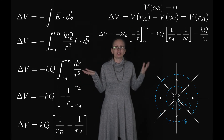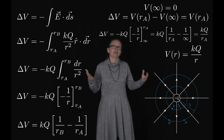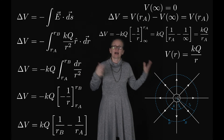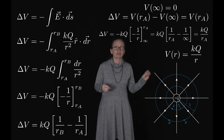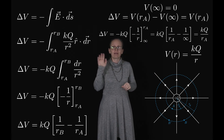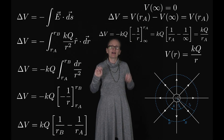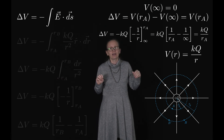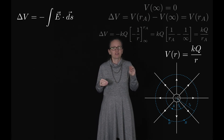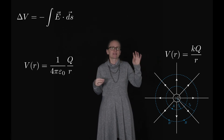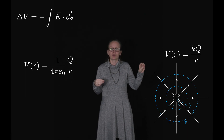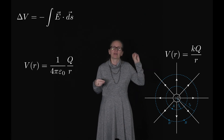This generalizes to any radius R around a point charge: V(R) = KQ/R. Recalling that Coulomb's constant K equals 1/(4πε₀), we can also write this as V(R) = Q/(4πε₀R).